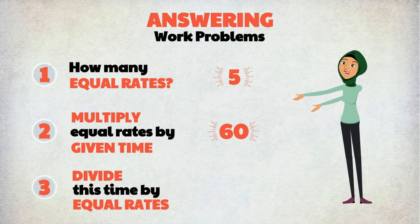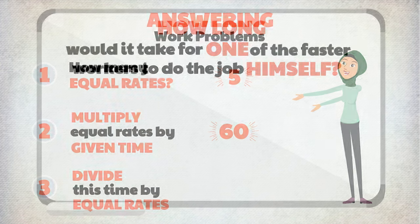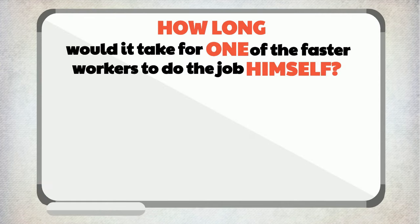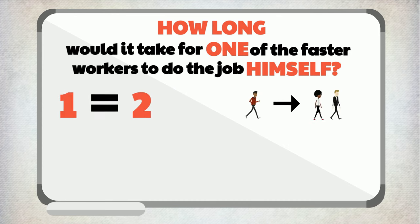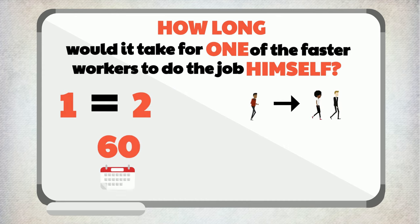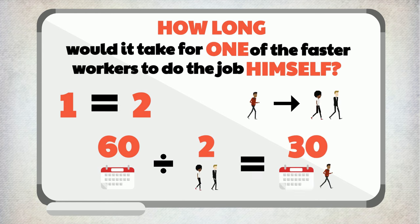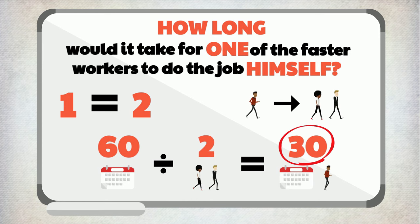Step three: divide this time by the number of equal rates. One fast worker equals two slow workers, therefore if we take 60 and divide it by two, we get 30 — thirty days to complete the job.